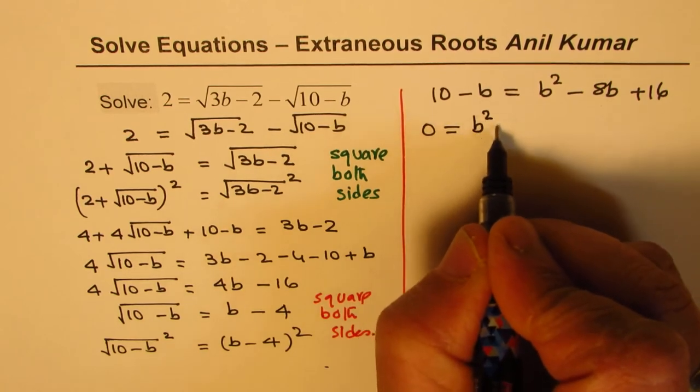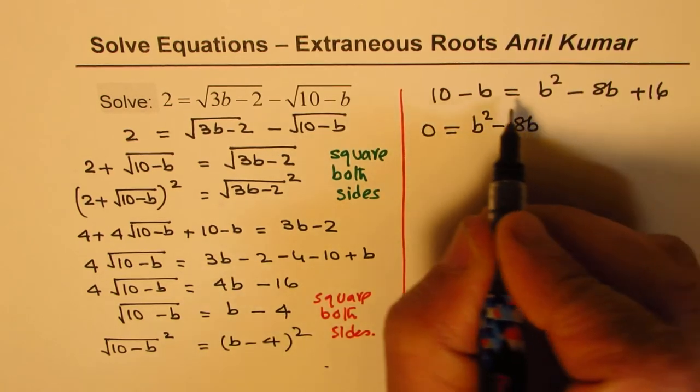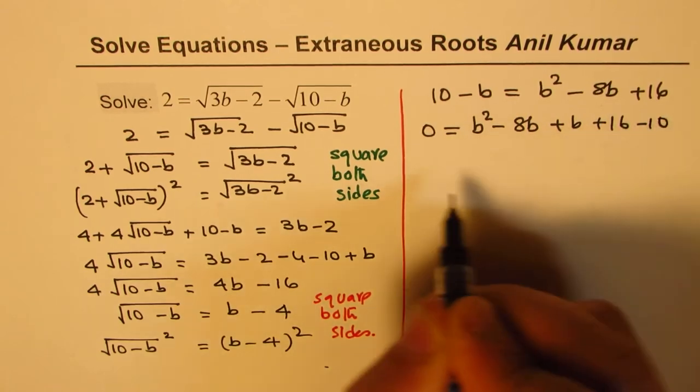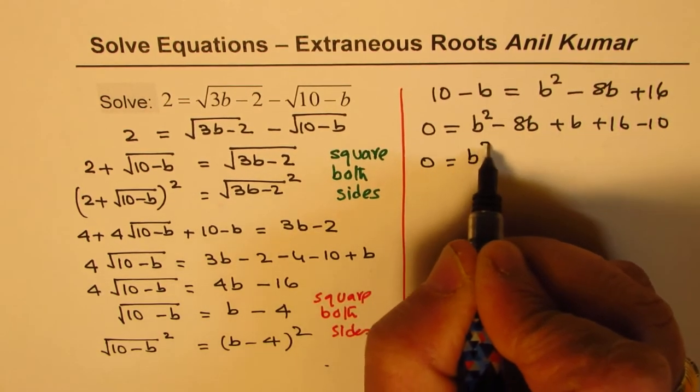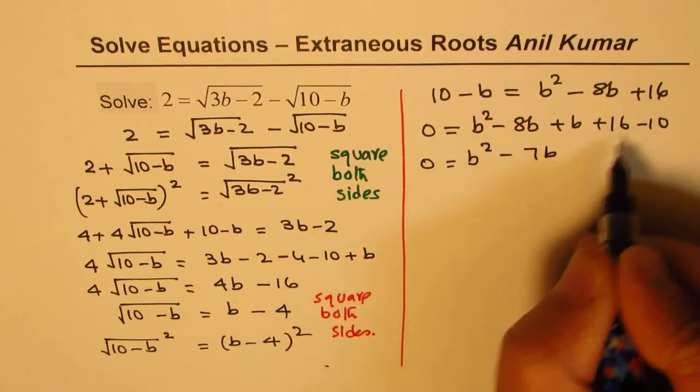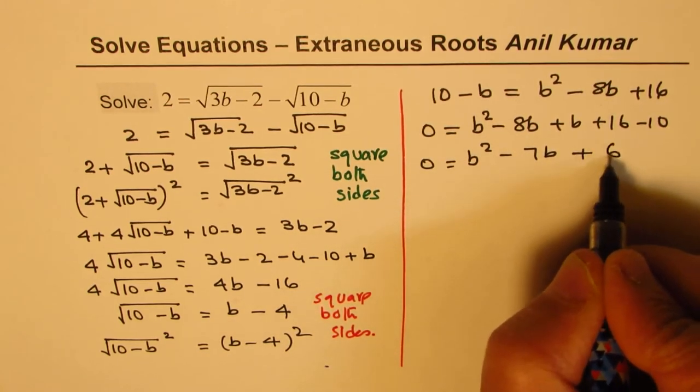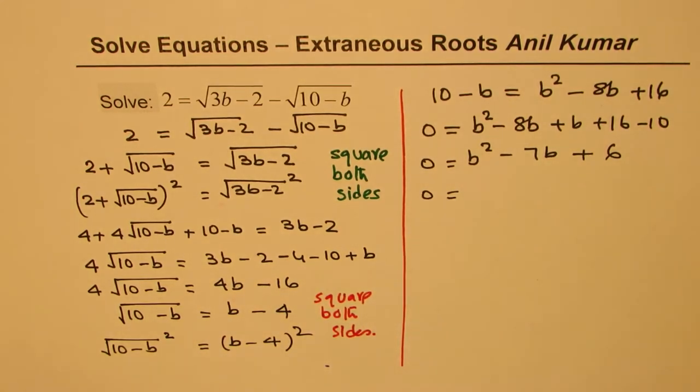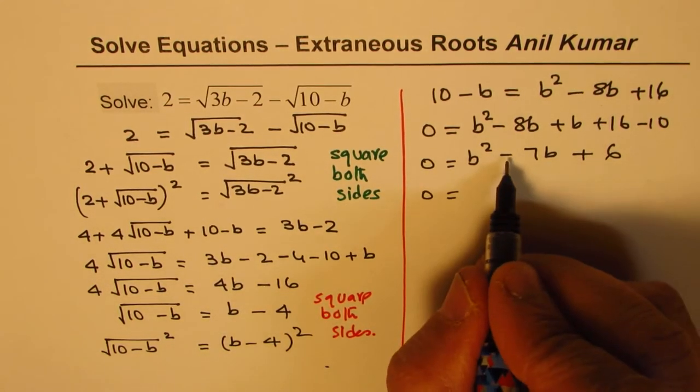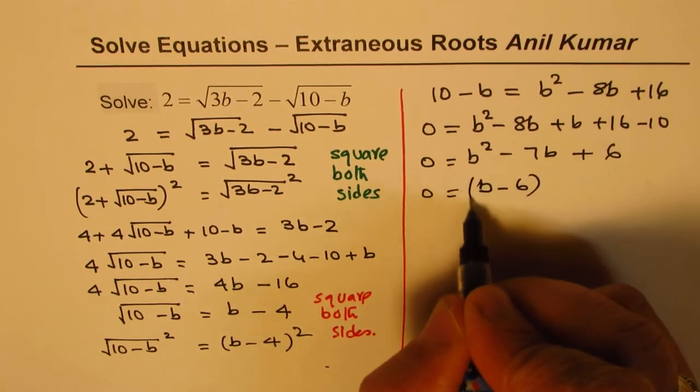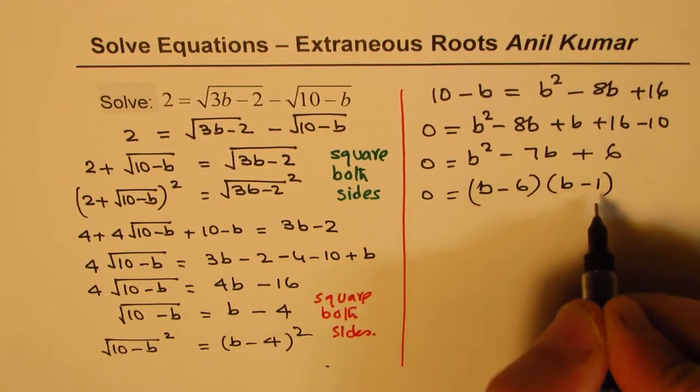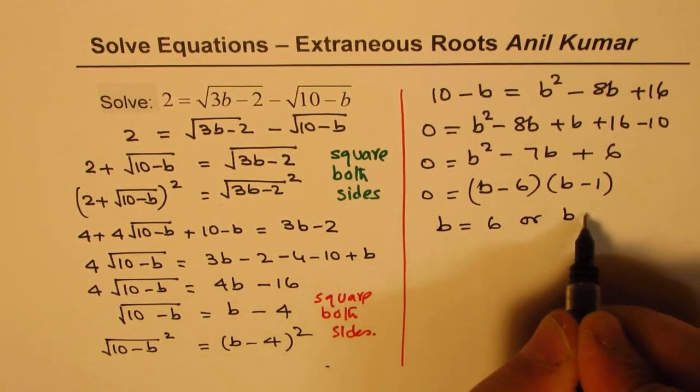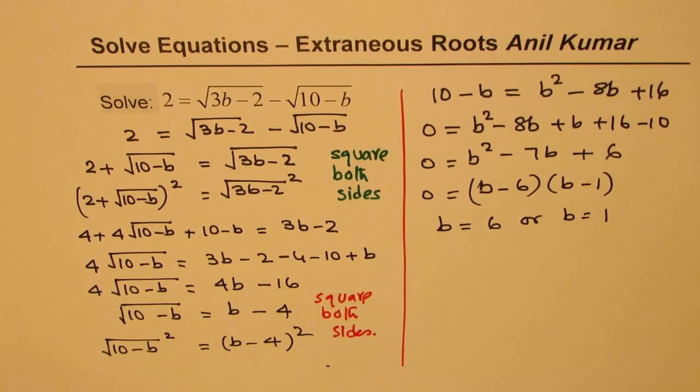Now let's take all the terms on the right side. We get a quadratic equation b square minus 8b, so we can write plus b. We have plus 16 and minus 10, so we get b square minus 7b and that gives us plus 6. Now this can be factored. Product 6 adding up to minus 7, that means b minus 6 times b minus 1 could work. So b equals 6 or b equals 1 could be our solution.